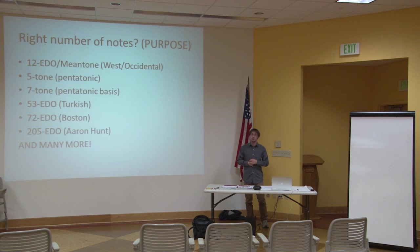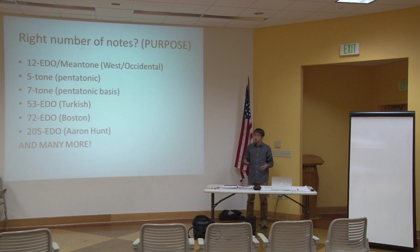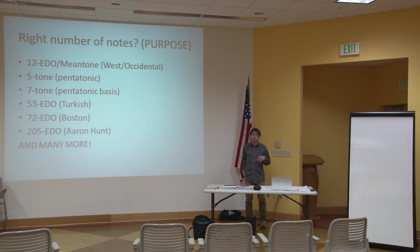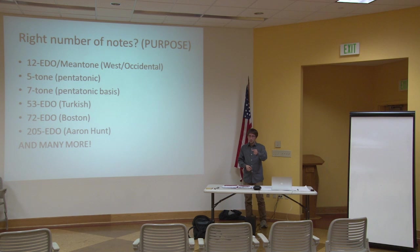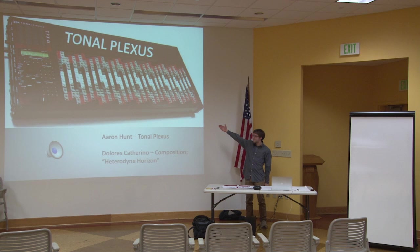205 is Aaron Hunt's number for estimating the full pitch spectrum. He designed and programmed a really cool instrument and notation system. We can only hear about a five-cent difference, so Aaron Hunt's instrument — more like a clavichord and it's electronic — has steps that are just about that size the whole way. This is the tonal plexus, Aaron's keyboard. It hybridizes what we know with microtonality — it looks just like a piano, so you can figure out where your hands go without knowing anything about the tuning.